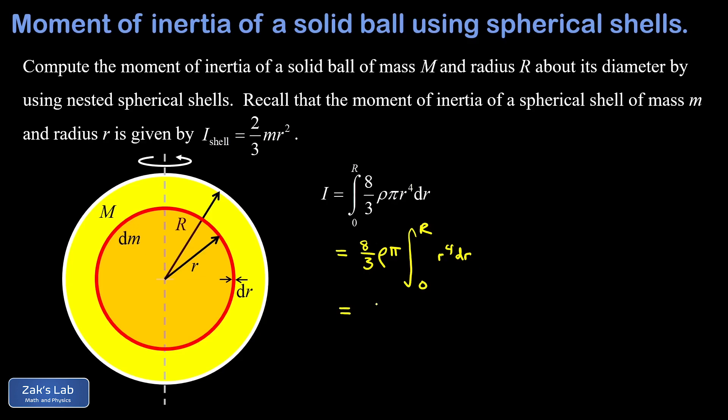While I'm writing down this step, I'm going to combine the one fifth with the eight thirds that's out in front. So we end up with eight over 15. And there's our little r to the fifth evaluated from zero to big R. Note that when we plug in the lower limit, we just get a zero. So that's gone. All we have to do is sub in big R for little r. And this leaves us with eight fifteenths rho pi big R to the fifth.